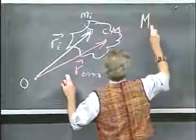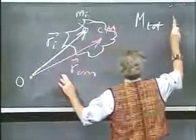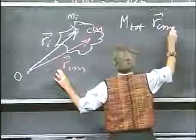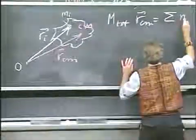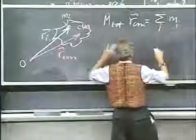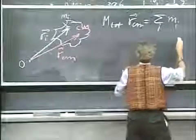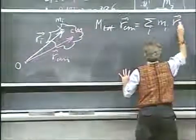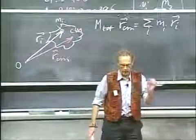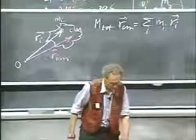The total mass of this object times the position vector of the center of mass is the sum over i of all these little elements m_i times the position vectors of the individual little particles that make up this object.